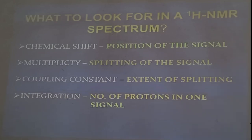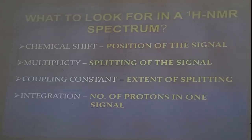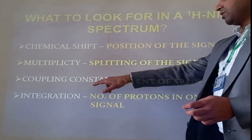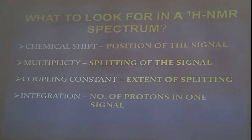This is the most important part of this course. In a proton NMR spectrum, there are four basic measurements to look for: chemical shift, multiplicity, coupling constant, and integration. Each of these parameters gives you different information.